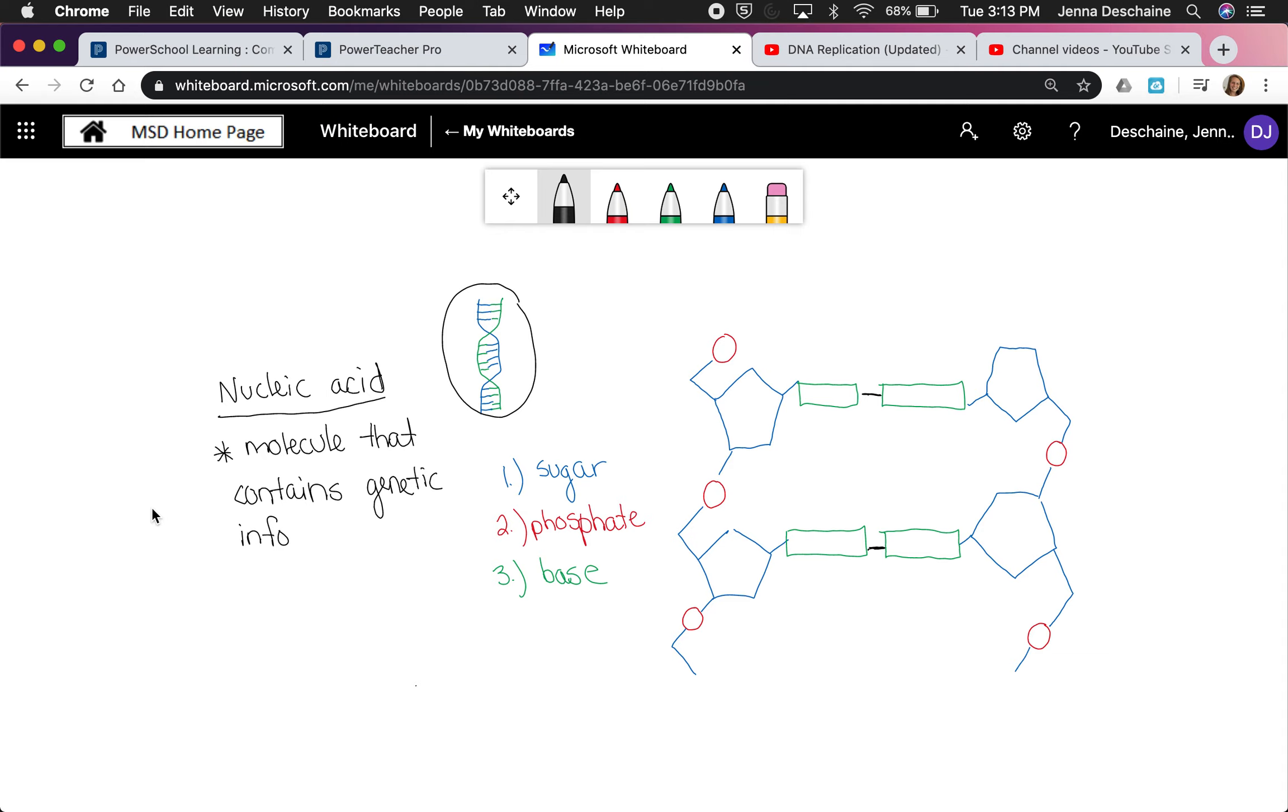There are other kinds of nucleic acids, like another molecule called RNA, but we're not going to get into that, at least today. We're going to only talk about DNA today. So DNA is made up of a basic structure called a nucleotide. DNA is a series of connected nucleotides.